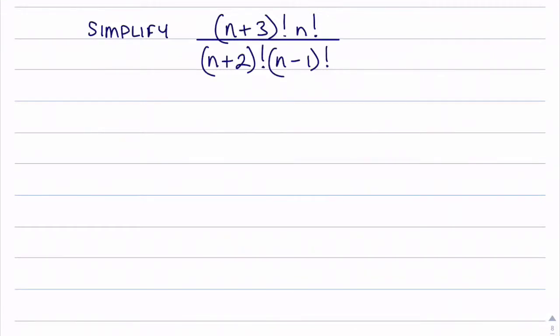In this question we're asked to simplify the factorial expression given. Looking at the numerator I can see I've got an n plus 3 factorial, and in the denominator I've got an n plus 2 factorial. So what I want to try and do is get that n plus 3 factorial rewritten as n plus 3 multiplied by n plus 2 factorial.